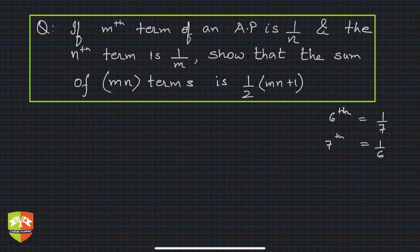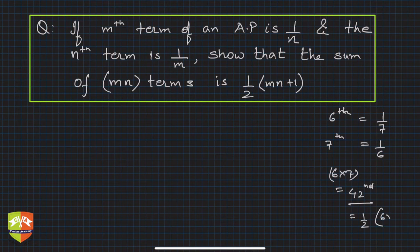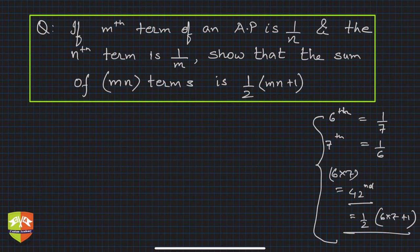So the sixth term is 1/7 and the seventh term is 1/6. Then you have to show that the mnth term — that is 6 × 7 = 42nd term — is given by ½ × 6 × 7 + 1. This is just an example to explain what the mnth term, mth term, and nth term mean.